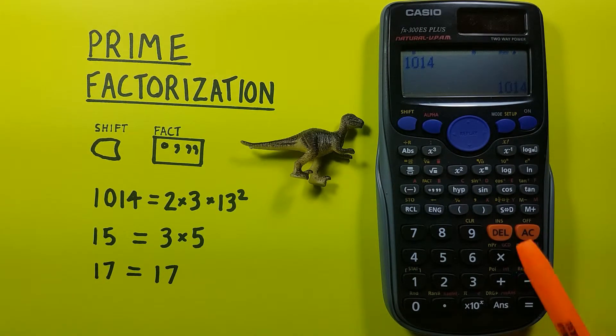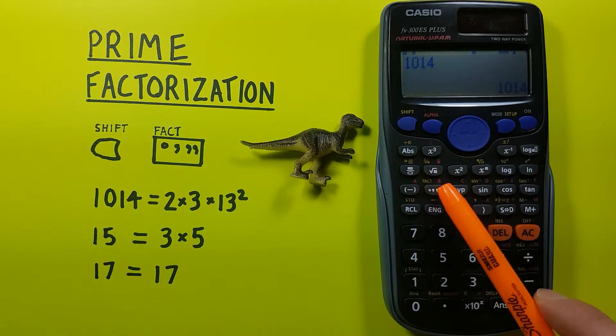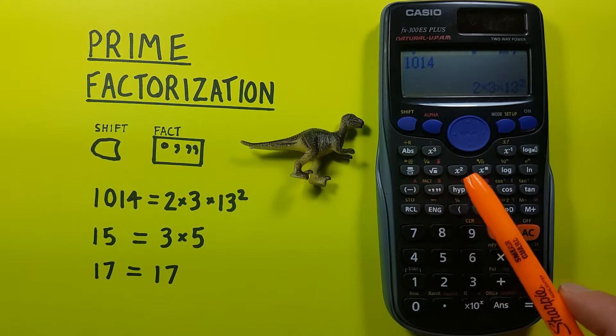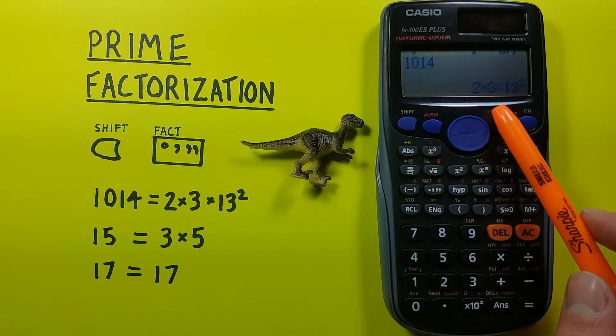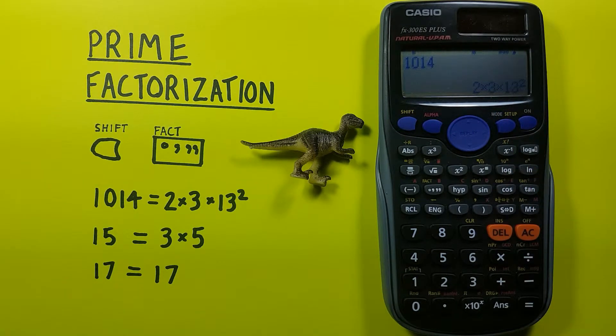We then press shift degrees minute seconds and we can see our 1014 has changed to the numbers 2 times 3 times 13 squared. That's what that exponent means, so 2 times 3 times 13 times 13 are the prime factors.